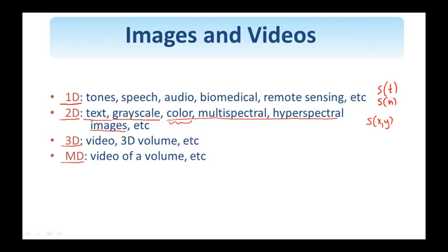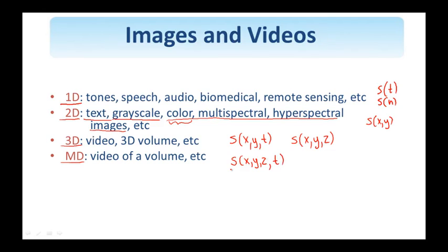Color images can also be viewed as three-dimensional images with two spatial and one spectral coordinate. Video is a 3D signal — it has two spatial and one temporal coordinate — while a 3D volume has three spatial coordinates X, Y, Z. As an example of a four-dimensional signal, I can look at a volume — an X, Y, Z signal that changes over time, so time is the fourth independent variable.